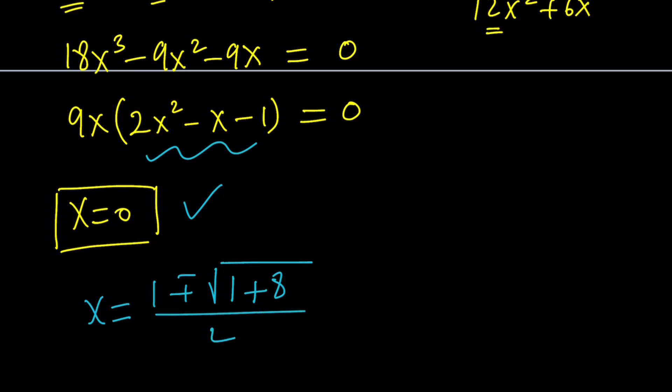And that is divided by 4, right? b squared minus 4ac. Great. So 9 is a perfect square. This tells us that there is going to be rational solutions. So one of them is going to be 1 plus 3 over 4, which is 1. And the other one is going to be 1 minus 3 over 4, which is negative 1 half.